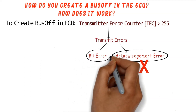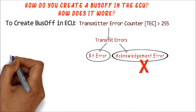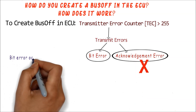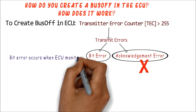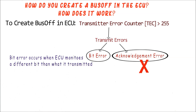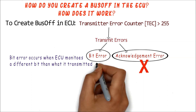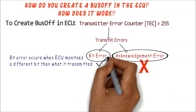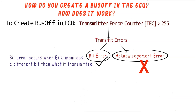So let us focus on the bit error. Bit error occurs when the ECU monitors a different bit than it transmitted. If the ECU sends a dominant bit and finds a recessive bit on the bus, or sends a recessive bit and finds a dominant bit on the bus, then a bit error is occurred and the transmit error counter will increase.